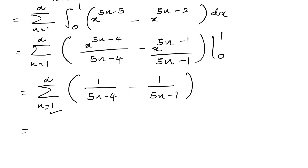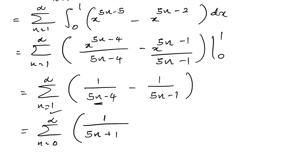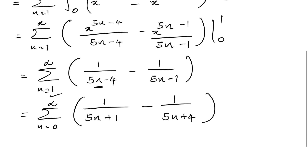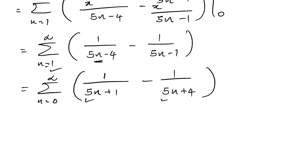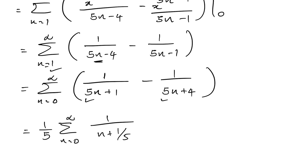Our infinite series begins with 1, so I'll change the index from n=1 to n=0 to infinity. When we change the index, instead of n we have n+1, so we get 1 over (5(n+1)−4) = 1/(5n+1), minus 1 over (5(n+1)−1) = 1/(5n+4). Taking 1/5 as a common factor, we can write 1/5 times the sum from n=0 to infinity of 1/(n + 1/5) minus 1/(n + 4/5).